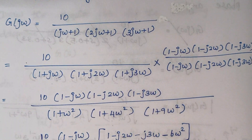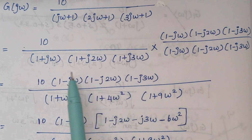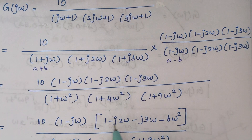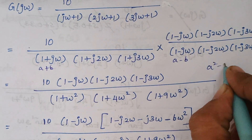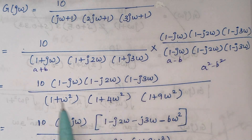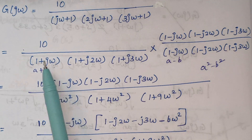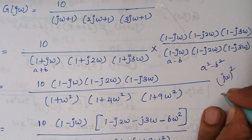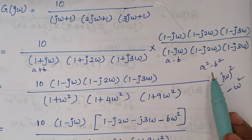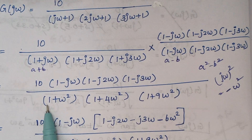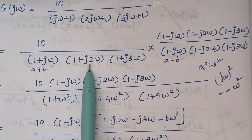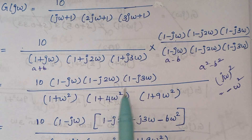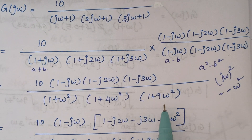The next step is simplifying. We combine the numerator terms. For the denominator, each pair is of the form (a+b)(a−b) = a²−b². With a=1 and b=jω: j²ω² = −ω², and with the existing minus sign, −(−ω²) gives 1+ω². Similarly, (1+j2ω)(1−j2ω) = 1+4ω², and (1+j3ω)(1−j3ω) = 1+9ω².